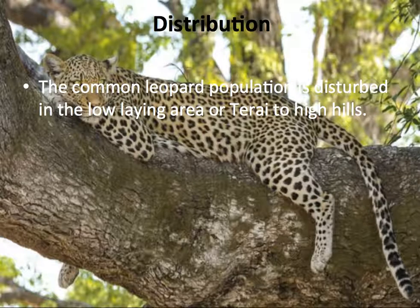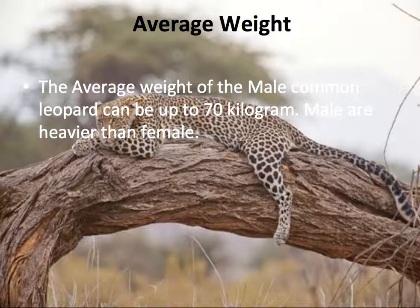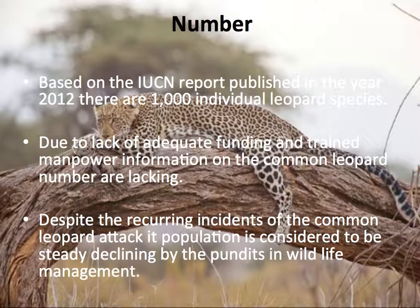Distribution: The common leopard population is distributed from the low-lying areas of the Tarai up to the high hills. Average weight: The average weight of a male is found to be up to 70 kg, with males being heavier than females.